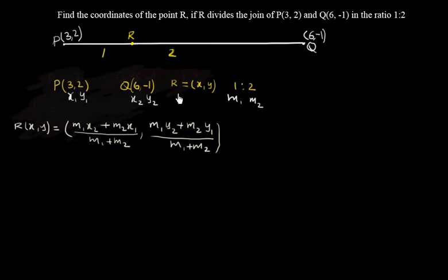So you just substitute the values. R(x,y) equals to m1 is 1 into x2, x2 is here 6, plus m2, m2 is 2 into x1 is 3, by m1 + m2, that is 1 + 2.